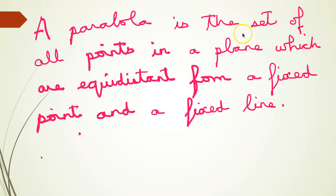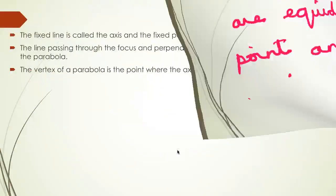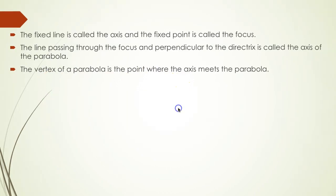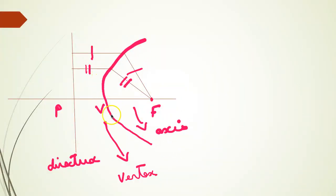Technically speaking, a parabola is the set of all points in a plane which are equidistant from a fixed point and a fixed line. The fixed line is called the directrix and the fixed point is called the focus. The line passing through the focus and perpendicular to the directrix is called the axis of the parabola, and the vertex of a parabola is the point where the axis meets the parabola. The axis is perpendicular to the directrix.